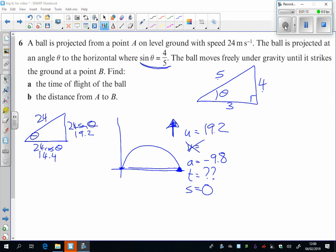We want it back where it started, so we want s equals 0 here. The formula we use is s equals ut plus 1 half a t squared.